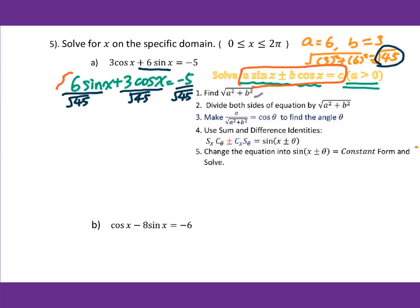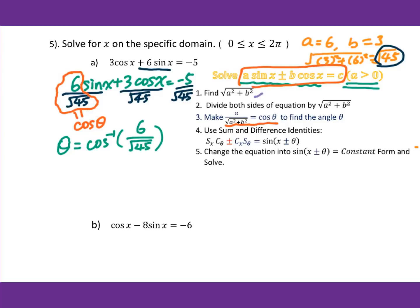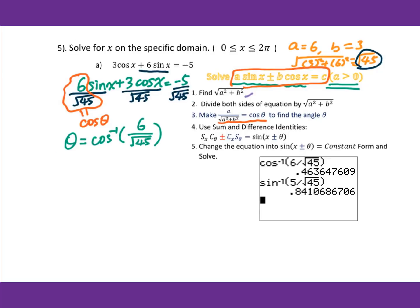Then we set up the coefficient beside sin x to equal cosine theta. Therefore, theta will be inverse cosine of 6 over square root of 45. Put it into the calculator and you will get 0.464.